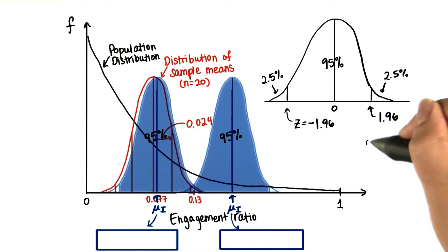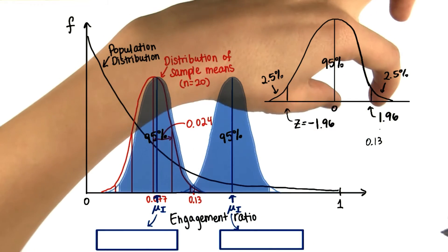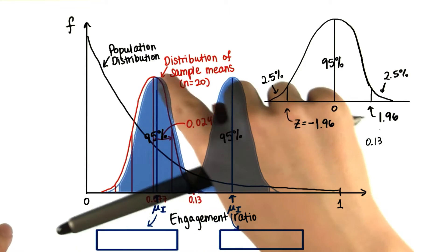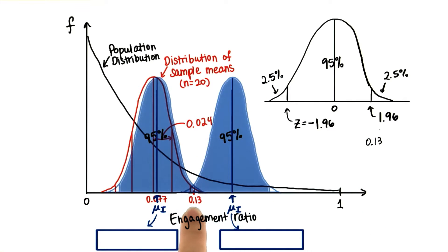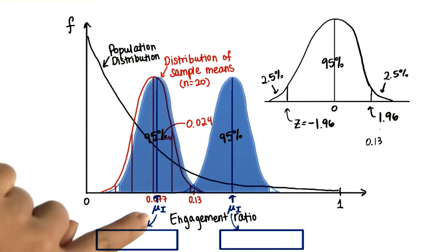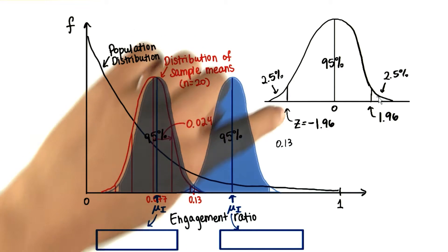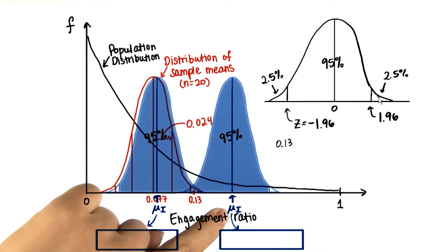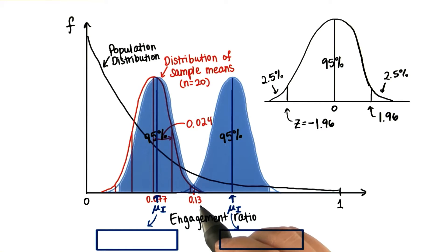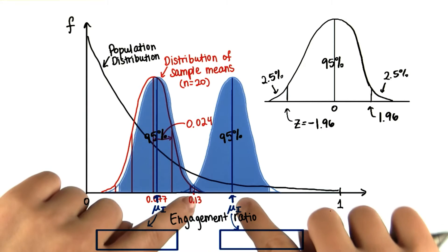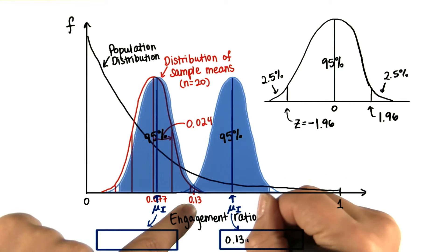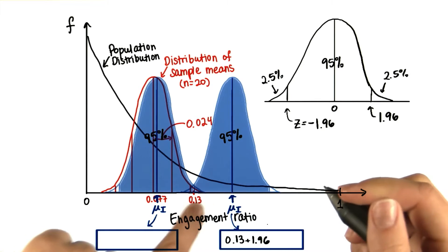So 0.13 can either be 1.96 standard deviations above the mean, like it is here, if this were the population distribution — meaning 0.13 is 1.96 standard deviations above mu. Or 0.13 can be 1.96 standard deviations below the true population mean, meaning the true population mean would be 1.96 standard deviations away.